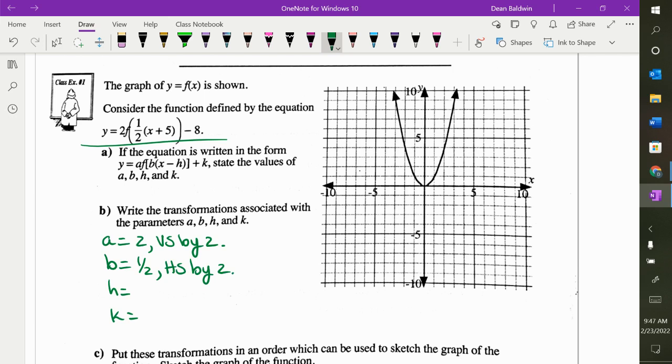What's my H? Negative five. It's what makes the inside zero. So that means we're going left. And K is minus eight, so we went down.